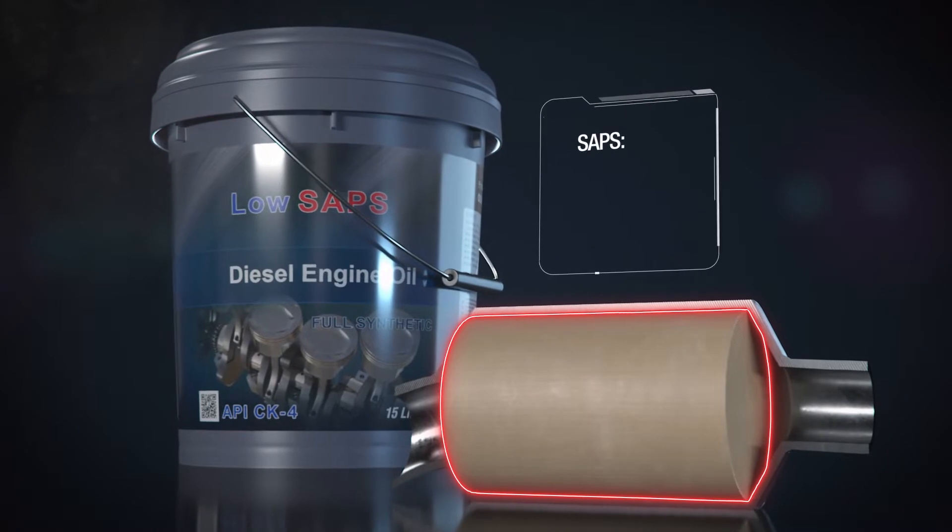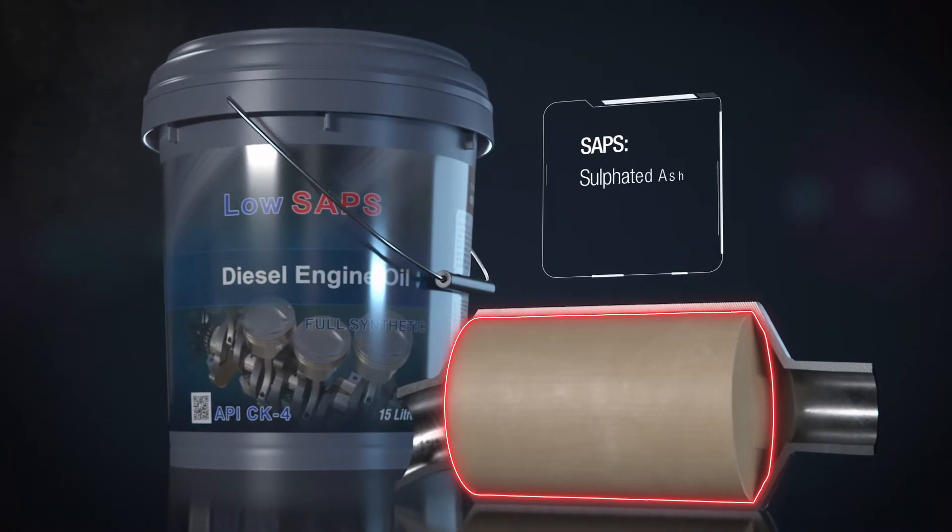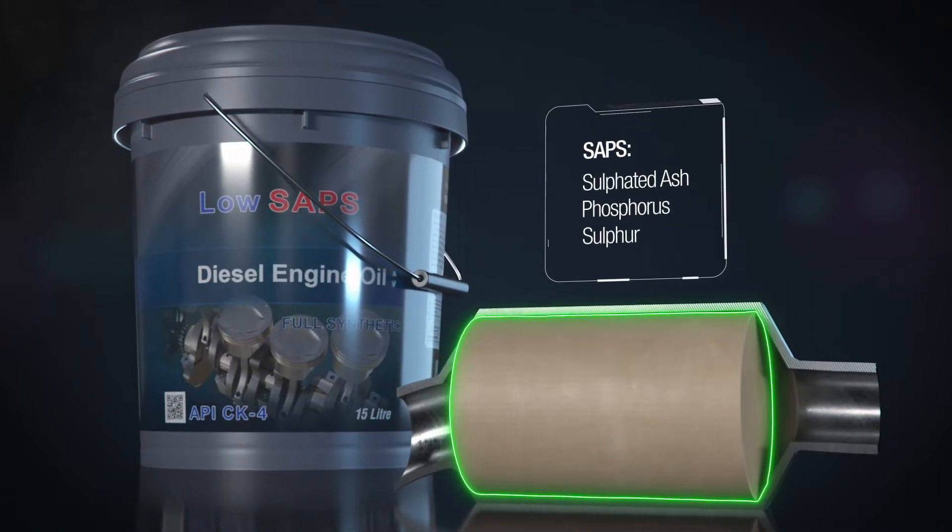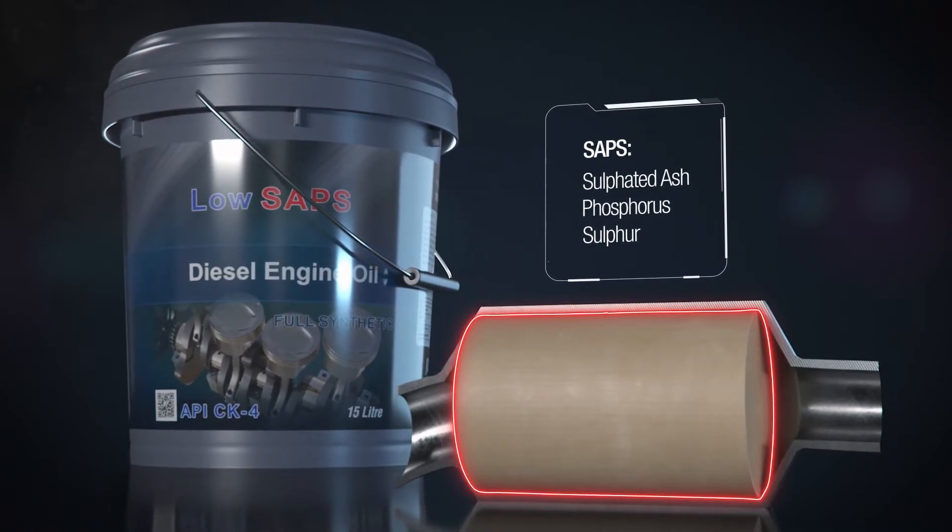DPFs work only when engine oils with low levels of sulfated ash, phosphorus and sulfur SAPS chemistry are used. Using an incorrect lubricant will quickly lead to DPF failures.